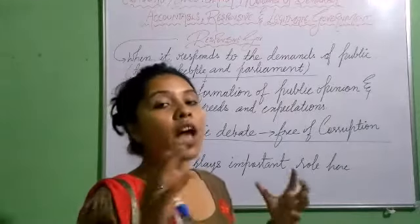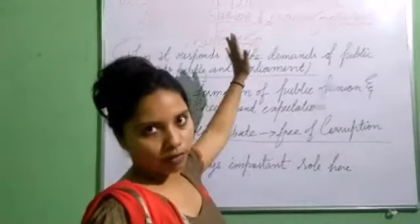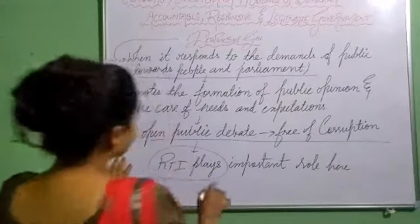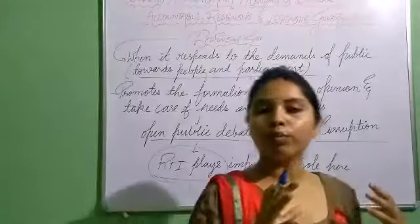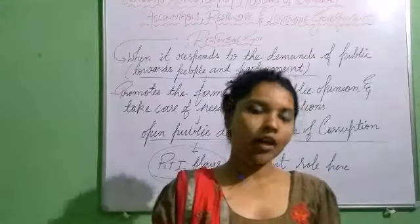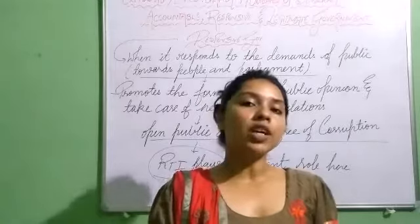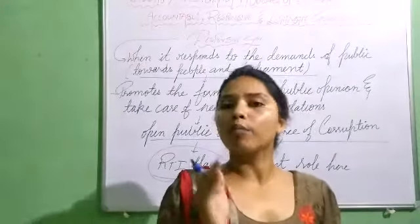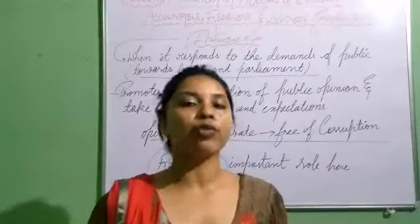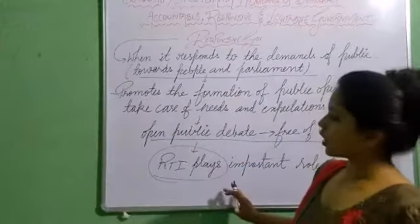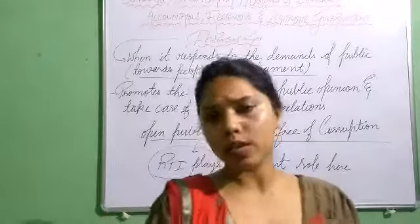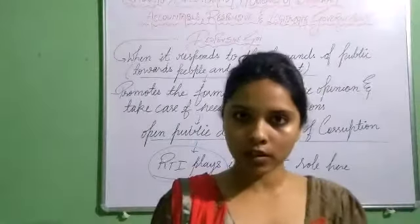It is the responsibility of political parties and the government to be corruption-free in their responsiveness. The last and very important point is RTI — Right to Information. RTI plays an important role because if there is a step in accountability or responsiveness, you can use RTI to find out. RTI is thus proving its importance and validating both accountability and responsiveness.